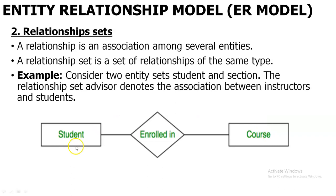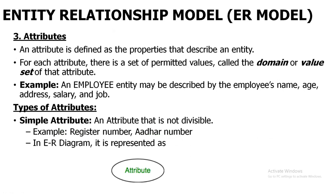It is not that two entities should have only one relationship — two entities can have multiple relationships also. The next one is attributes. In entity sets, all the entities will be having common attributes or common properties. Those properties here will be called attributes.